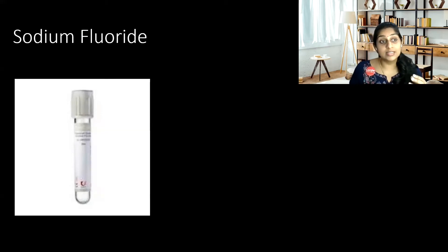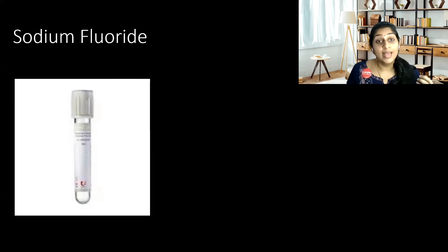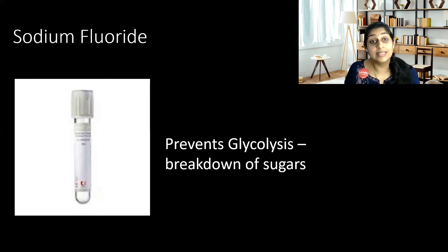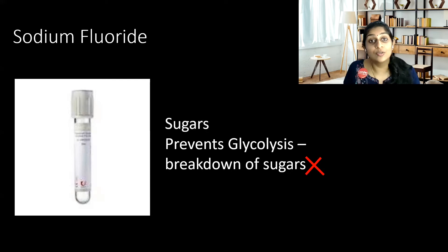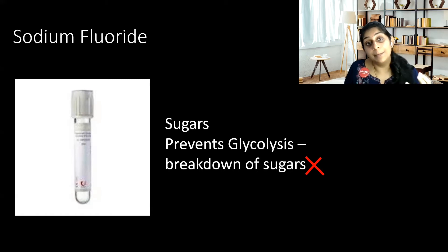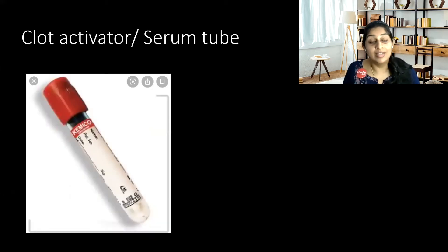First is the sodium fluoride tube, or the gray colored tube. In this tube there is sodium fluoride, so it prevents glycolysis — that is, there is no breakdown of sugars. When there is no breakdown of sugars, this tube is mainly used for measuring the sugar levels in the blood. So this tube can be used for fasting, post-prandial, and also for the random blood glucose level.